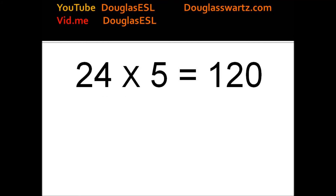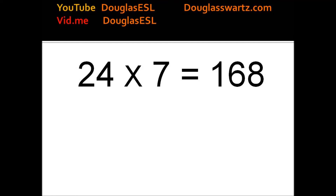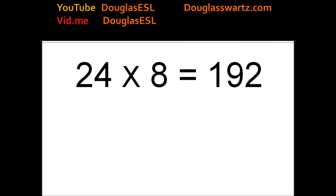24 times 5 equals 120. 24 times 6 equals 144. 24 times 7 equals 168. 24 times 8 equals 192.